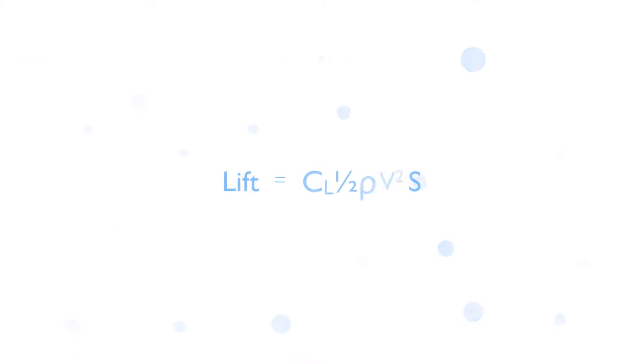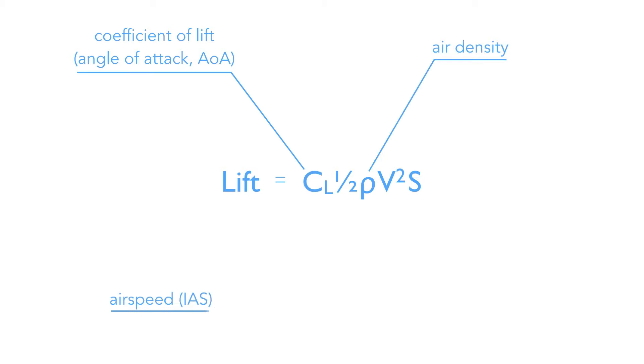So let's have a look at the lift formula and its elements. Lift is a force. CL stands for the coefficient of lift. This value is determined by engineers as part of the wing design process. It lets us know how much lift the wing can produce at any given angle of attack.